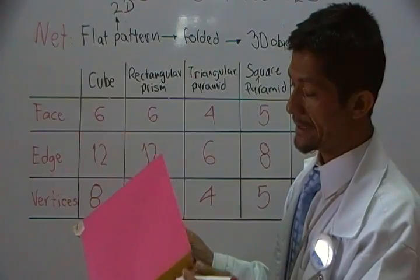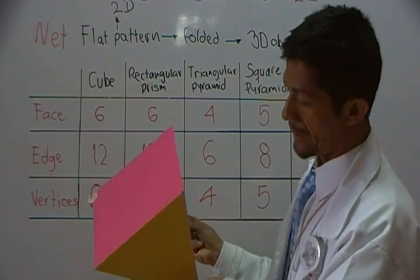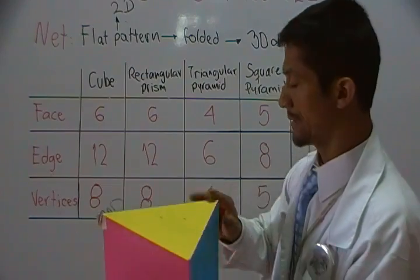And finally, the vertices are one, two, three, four, five, and six.